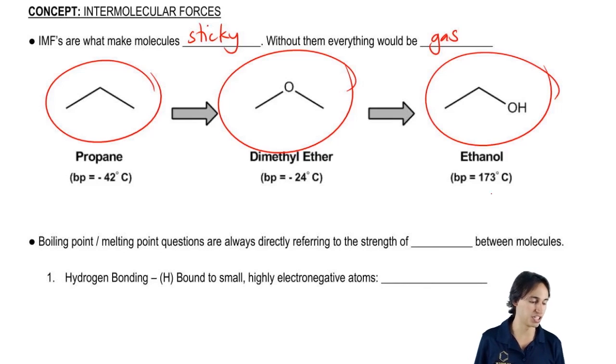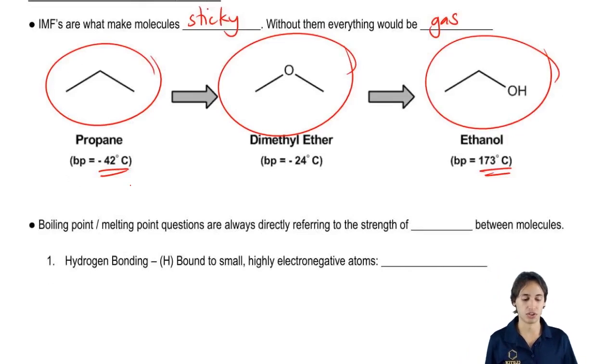That's crazy. Look how much different this boiling point is from this one. What's the difference? Why is it such a much higher boiling point? Why does ethanol exist as a liquid at room temperature whereas propane and dimethyl ether are going to exist as a gas? And the reason has to do with intermolecular forces.